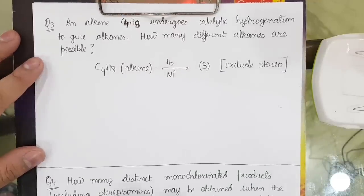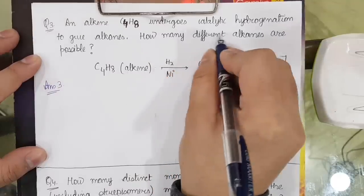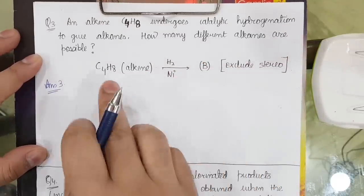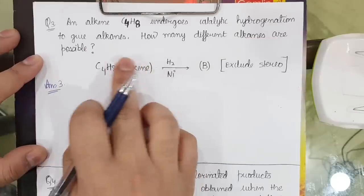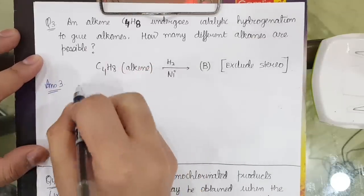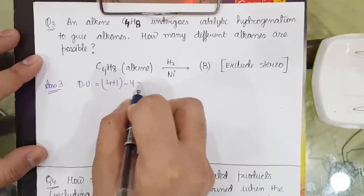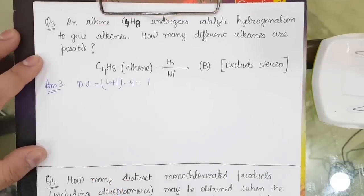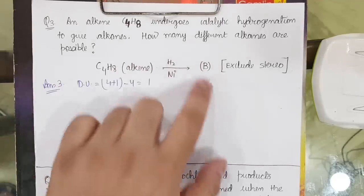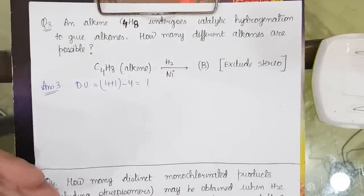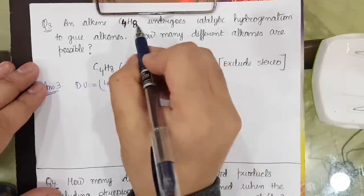The next question: an alkene C4H8 undergoes catalytic hydrogenation to give an alkane. How many different alkanes are possible? The degree of unsaturation = (4+1) - (4/2) = 1. Since the degree of unsaturation is 1 and it undergoes hydrogenation, it must have a double bond — no ring is present.